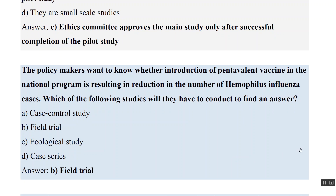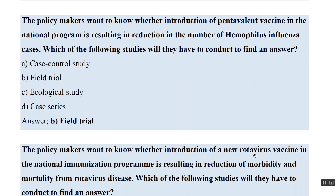There are a few questions in this chapter that I could not find any reference to in the provided literature. For example: policy makers want to know whether the introduction of the pentavalent vaccine in the national program is resulting in a reduction in the number of Haemophilus influenzae cases. Which of the following studies will they have to conduct? The options are case-control study, field trial, ecological studies, and case series. The answer is field trial.